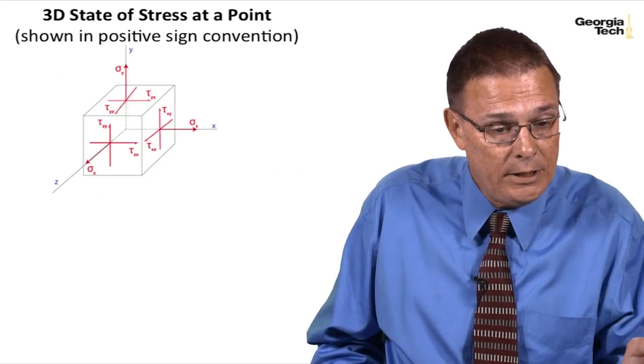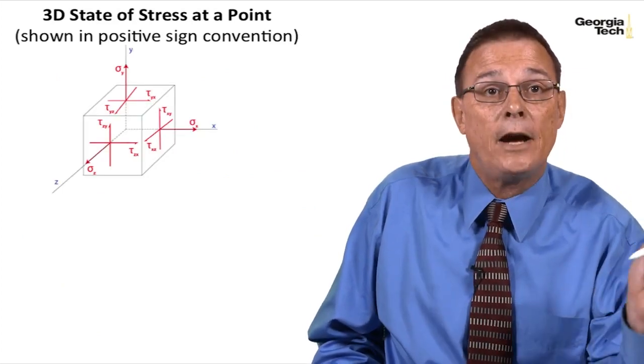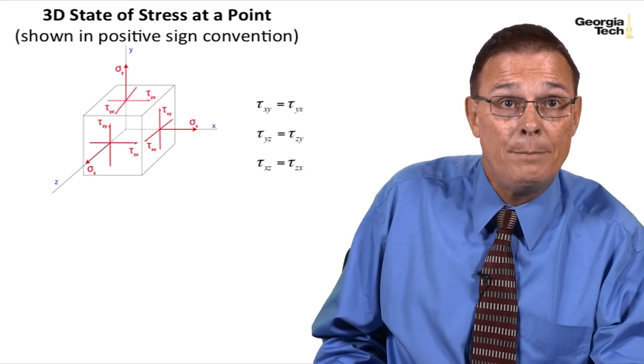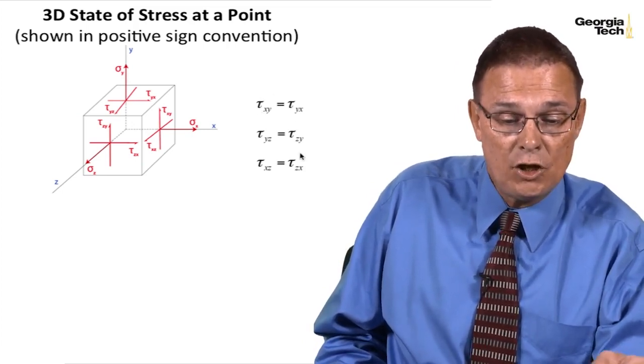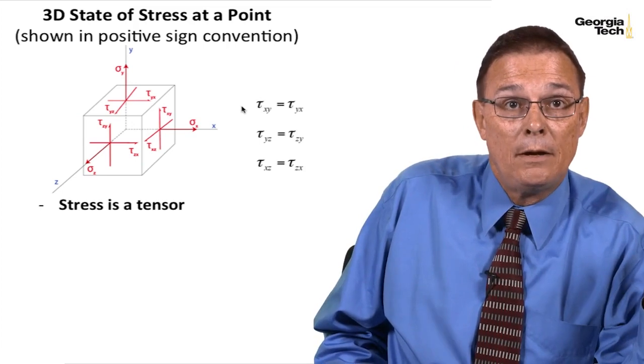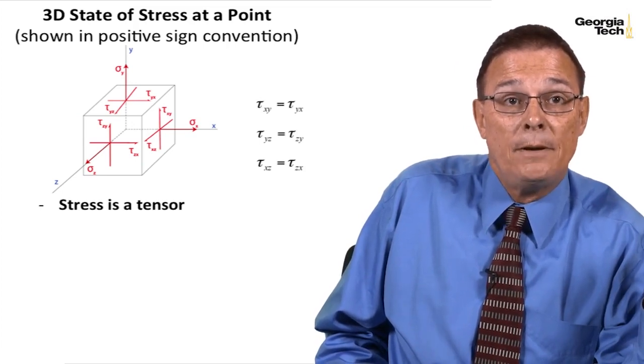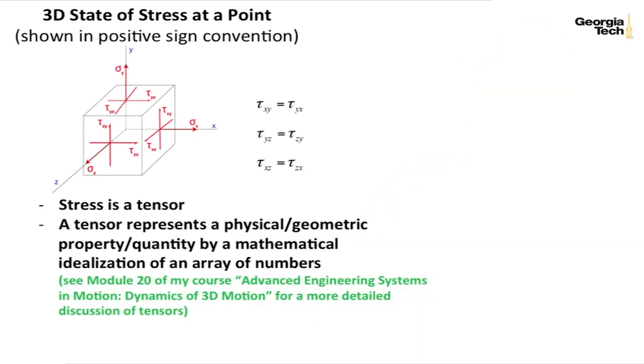So here is my 3D state of stress shown in a positive sign convention. Remember, by equilibrium, that these shear stresses are equal, and the stress is represented in a matrix as a tensor.